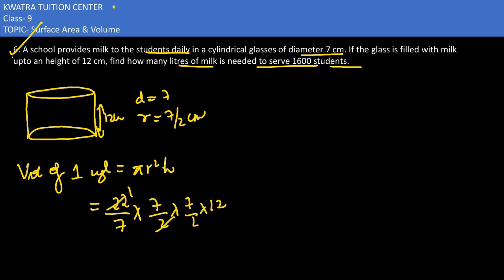2 and 22 can be cancelled, 11 would be there. 2 and 12 can be cancelled, 6 would be there. 7 and 7 would be cancelled. So we have 7 into 6 which is 42, and 42 into 11 would be 462 cm cubed.